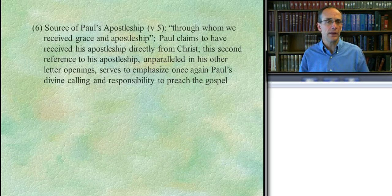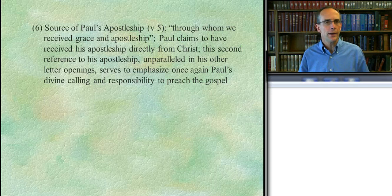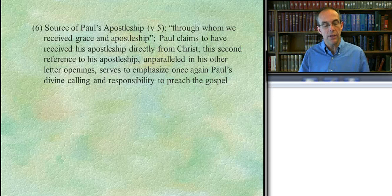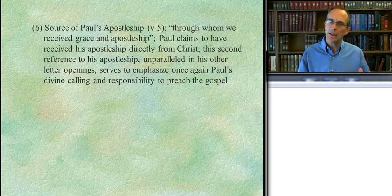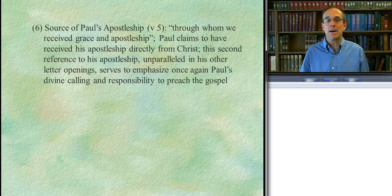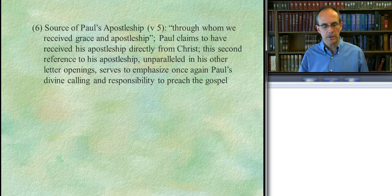Here's yet another clever thing Paul does in the letter opening. He refers a second time to his apostleship. There's only one other letter where Paul twice refers to his apostleship, and it's significant there too. Notice also the antecedent of this clause: 'Through whom we have received grace and apostleship.' The antecedent of 'whom' is Jesus Christ. So here's another powerful claim — I'm not just pretending to be an apostle, it wasn't just an idea I came up with; it's Jesus Christ himself who has called me to this particular role.